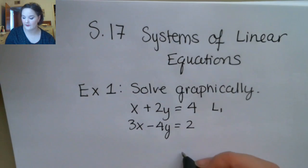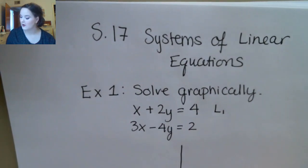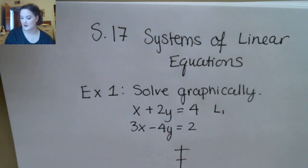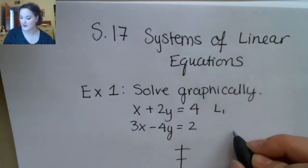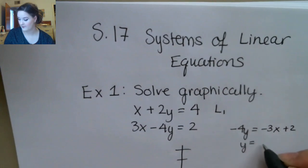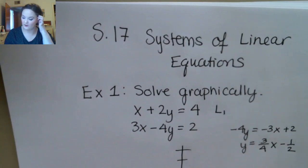To solve graphically you need to graph each one of these equations. I'm probably going to use the x and y intercept method. For the first equation I would get that my x-intercept is 4 and my y-intercept is 2. Then for the second equation, just for variety, I'll put it in slope-intercept form. So my y-intercept is negative 1/2 and my slope is 3/4.